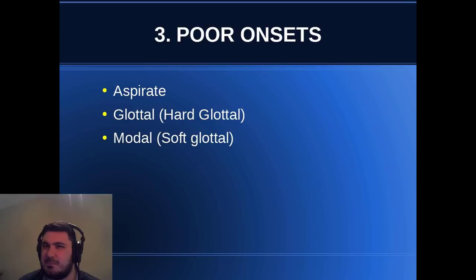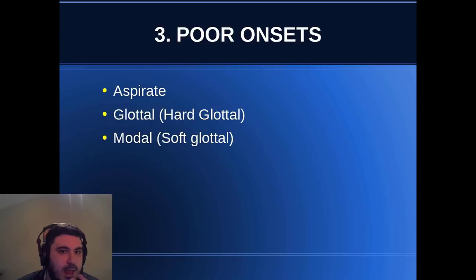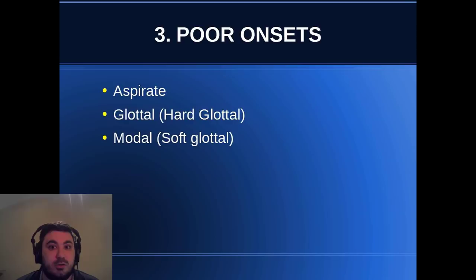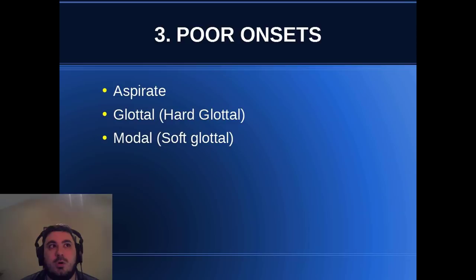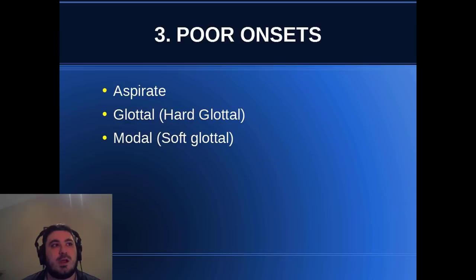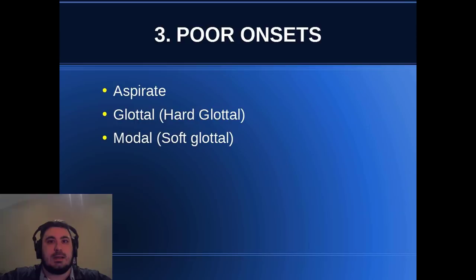The aspirate onset is when you start a word with a vowel but push air through at the same time — the air pushes through before the folds close and engage. If I said 'onset' with an aspirate onset, I'd go 'hon-set' — it almost has an H in front of it. As long as you don't do it too much, it's not the end of the world. But the bigger downside is that when you push air through, you're using air you've got stored inside, making it harder to maintain phrases and sing effectively, because all that breath support just gets expelled. So aspirate onsets can inhibit good breath support.